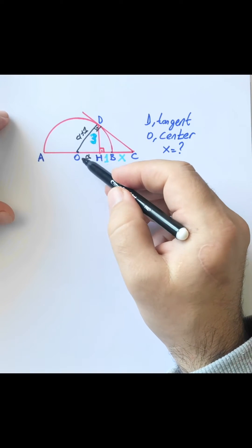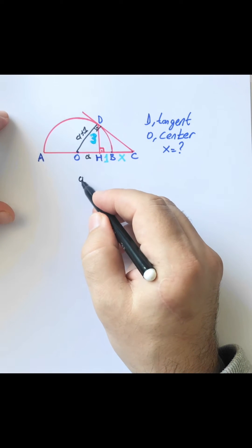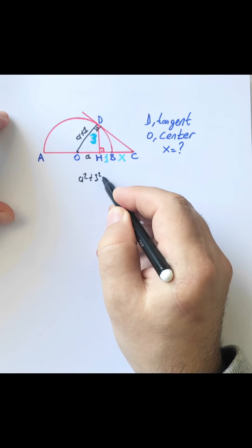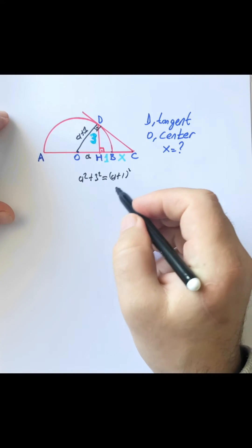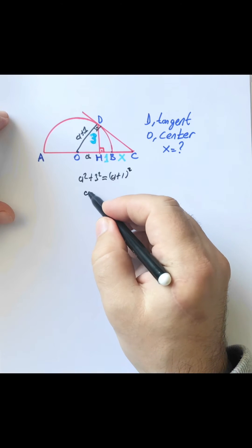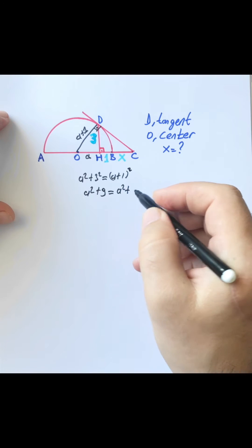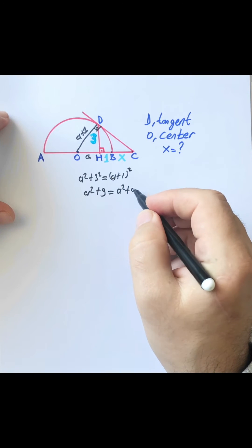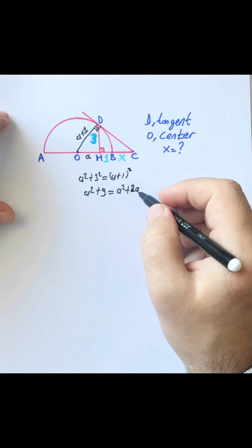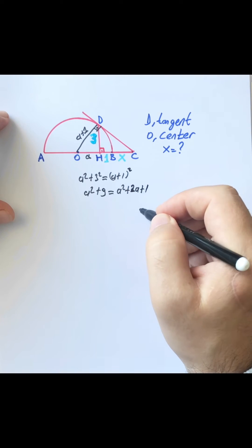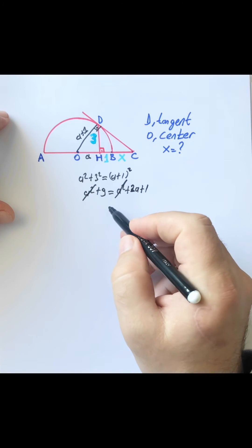When we use the Pythagorean theorem in triangle OHD: a squared plus three squared equals a plus one squared. So a squared plus nine equals a squared plus two times a plus one, which gives us a equals four units.